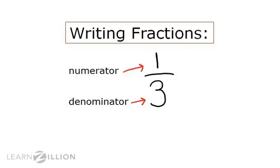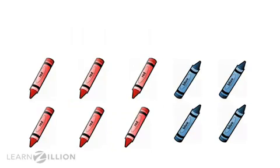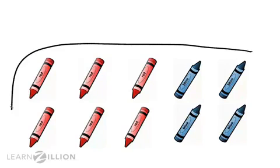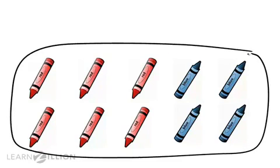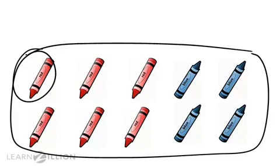I'm going to show this to you by looking at a set of crayons. There are ten crayons in this set. I can think of all ten crayons as my whole. If I want to break the whole into equal parts, each crayon becomes an equal part. That means that there are ten equal parts in the whole set, and each crayon becomes one part out of a total of ten, or one-tenth of the set.